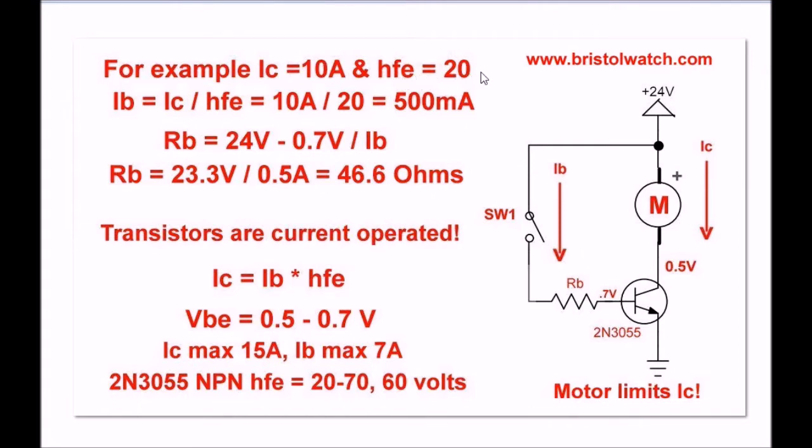All right, what are we going to have for IB? IB is your base current. When I close this switch, I will have a current flow through RB into the 2N3055. This will produce a base emitter voltage of 0.5 to 0.7 volts. Not that important. You can choose something in between, like 0.6.